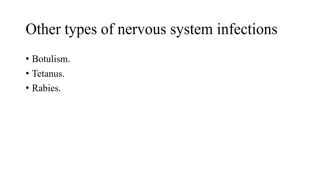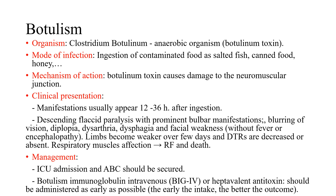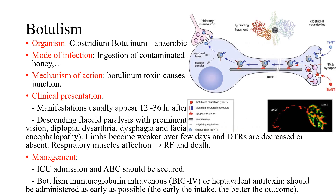There are other types of neuroinfections — botulism, tetanus, and rabies. They are not that common but are very serious. Botulism is caused by Clostridium botulinum, an anaerobic organism that produces botulinum toxin. The patient gets infected by ingesting contaminated food such as salted fish, canned food, or honey. The toxin acts at the neuromuscular junction, blocking acetylcholine vesicles from releasing acetylcholine, thus causing acute flaccid paralysis.